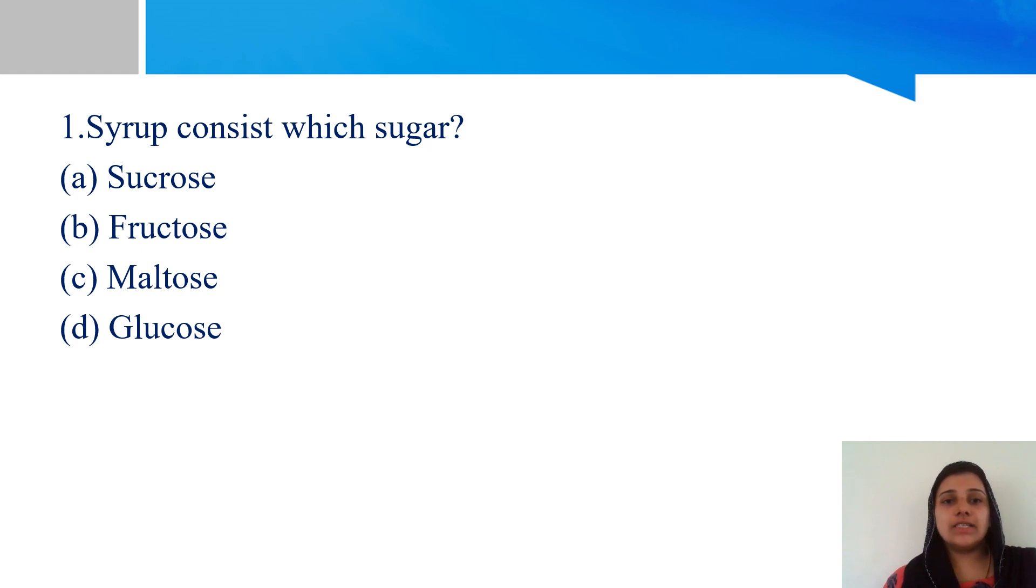First question is, syrup consists of which sugar? It is a liquid dosage form. There are sugars present in the syrup. Options include sucrose, fructose, maltose, and glucose. Which sugar is present in the syrup? The answer is option A. Sucrose is the right answer. The sugar present in syrup is sucrose.